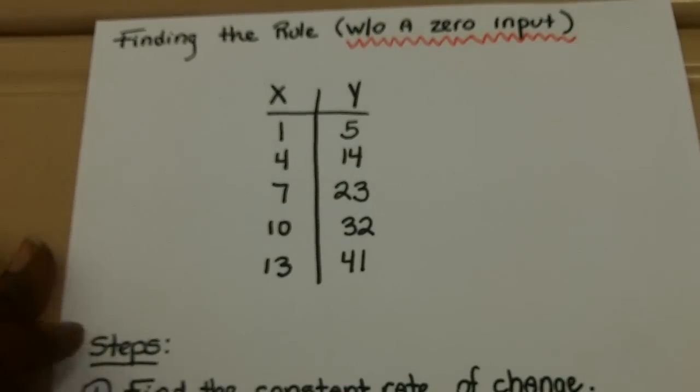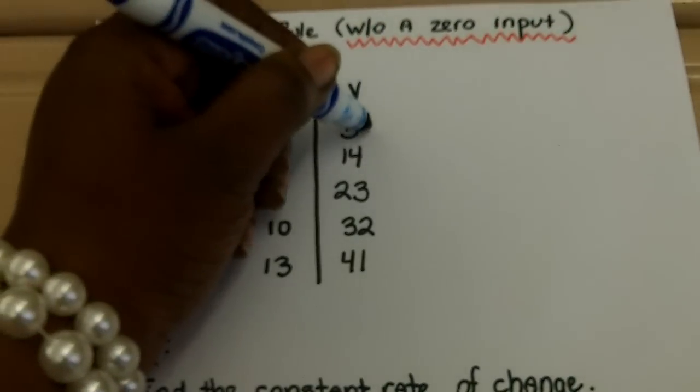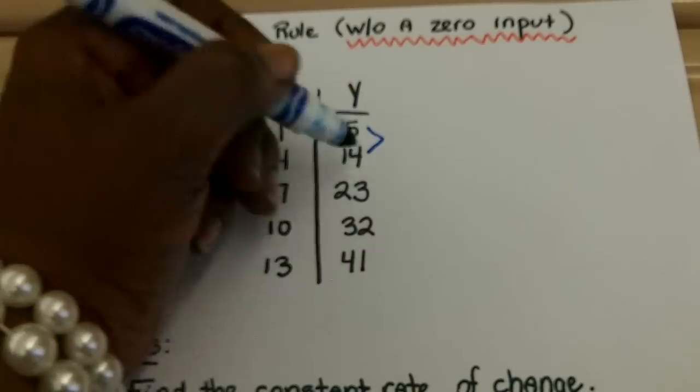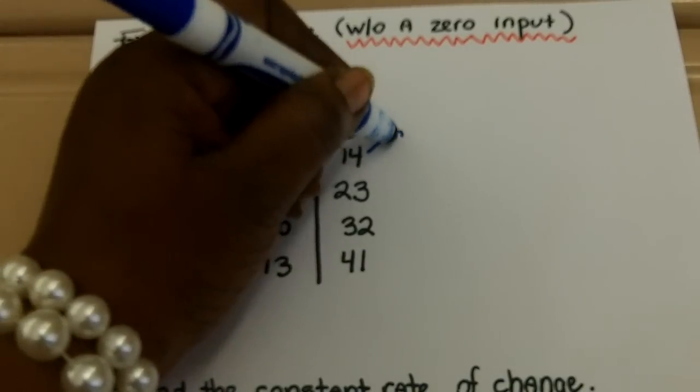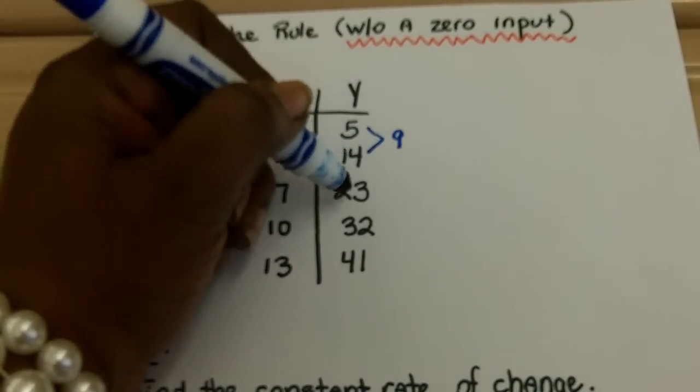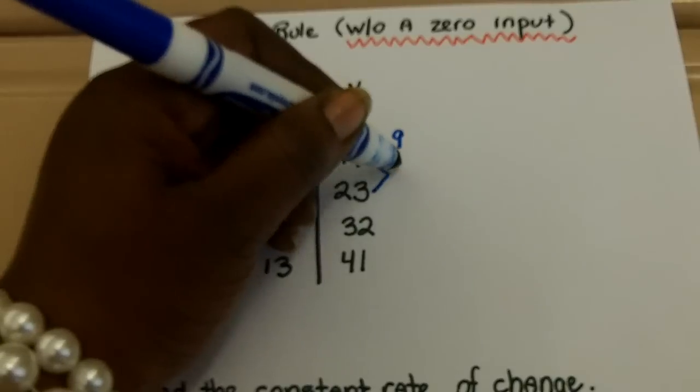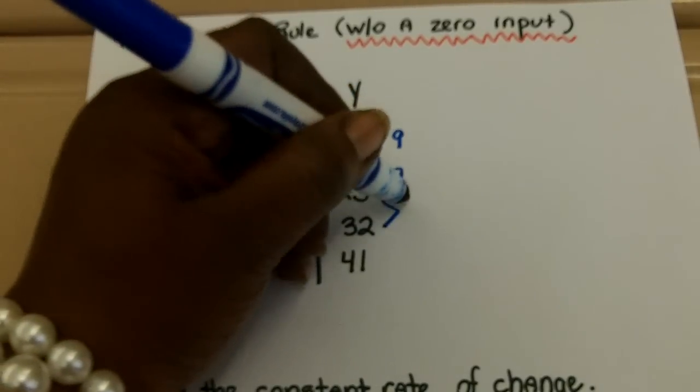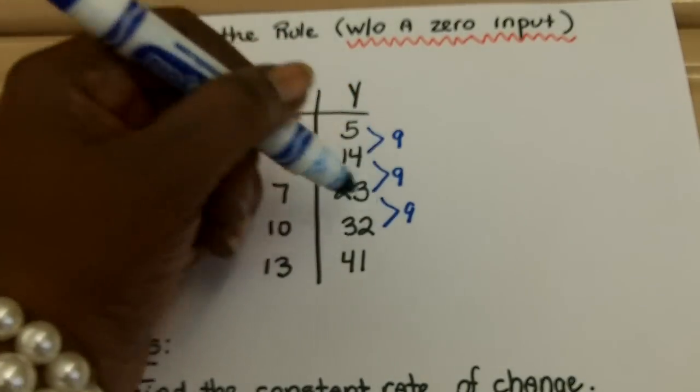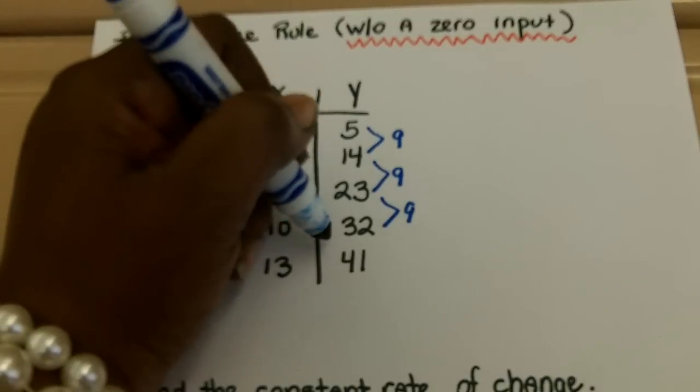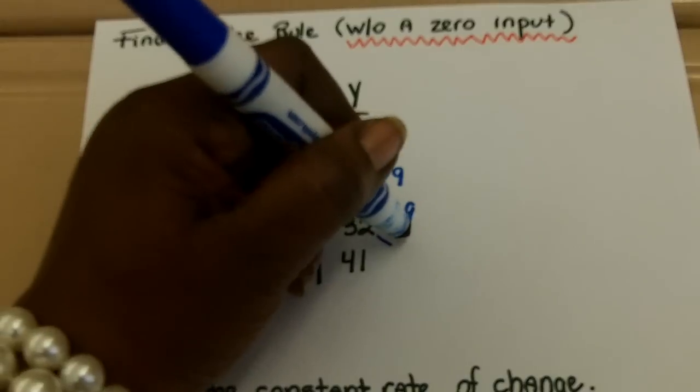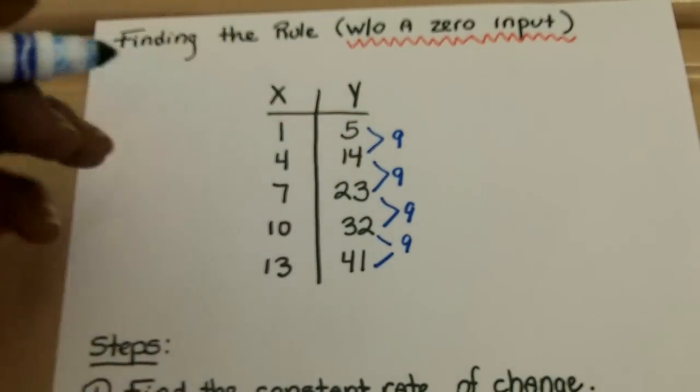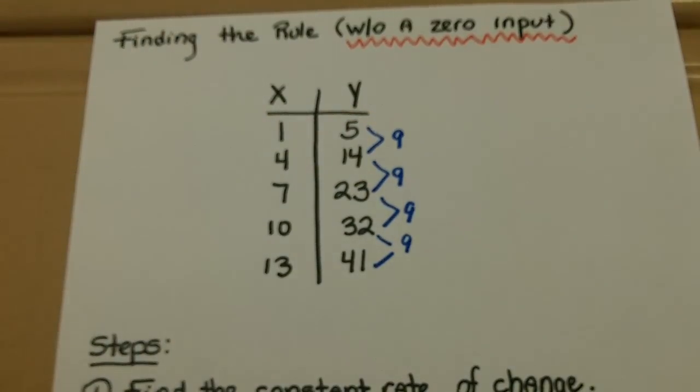So remember, that means your change of y's divided by your change of x. So you're going from 5 to 14. That's the difference of 9. 14 to 23 is also a difference of 9. 23 to 32, 9. So it looks like it's increasing by 9. Let's check it one more time. 32 plus 9 is 41. So my change of y, 9.